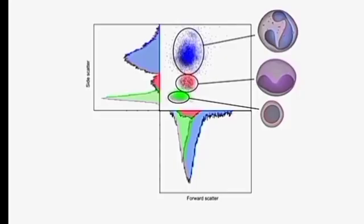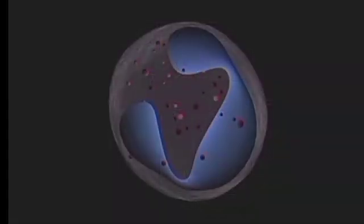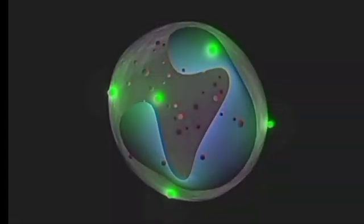Thus, heterogeneous population cells are divided according to the size, shape, and complexity by flow cytometer. It can also detect the emitted light from the excited fluorescent molecules such as fluorescent dyes and stains.